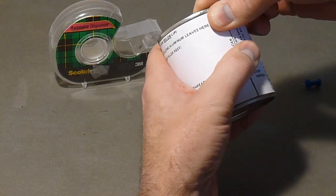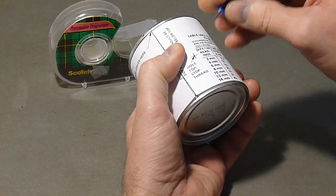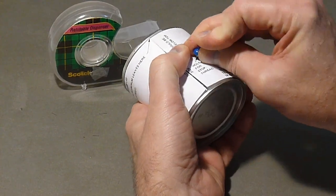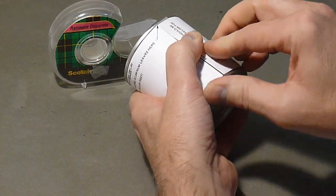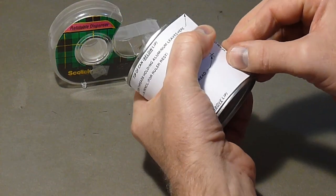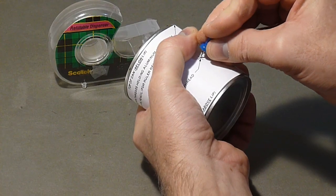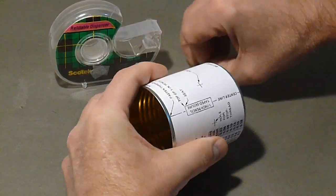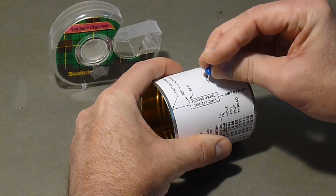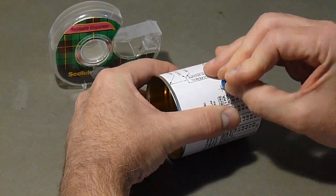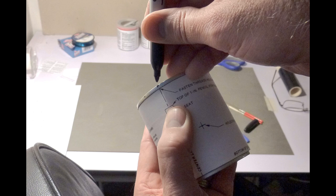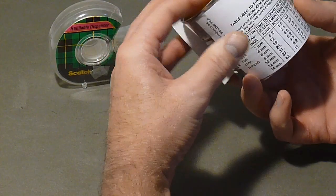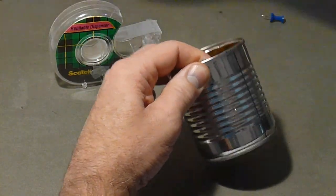Wrap the label tightly around the can and hold it firm. Take the push pin and push it through the can in the four locations marked 'holes for stop threads.' Mark the top of the lip on the opposite side from the seam. Remove the label and set it aside for later.